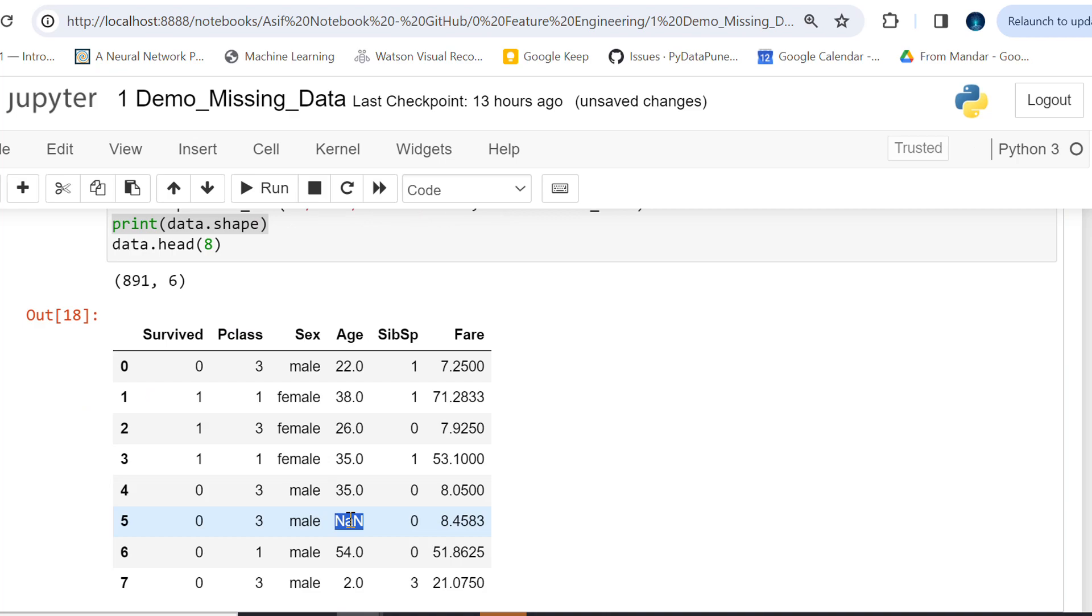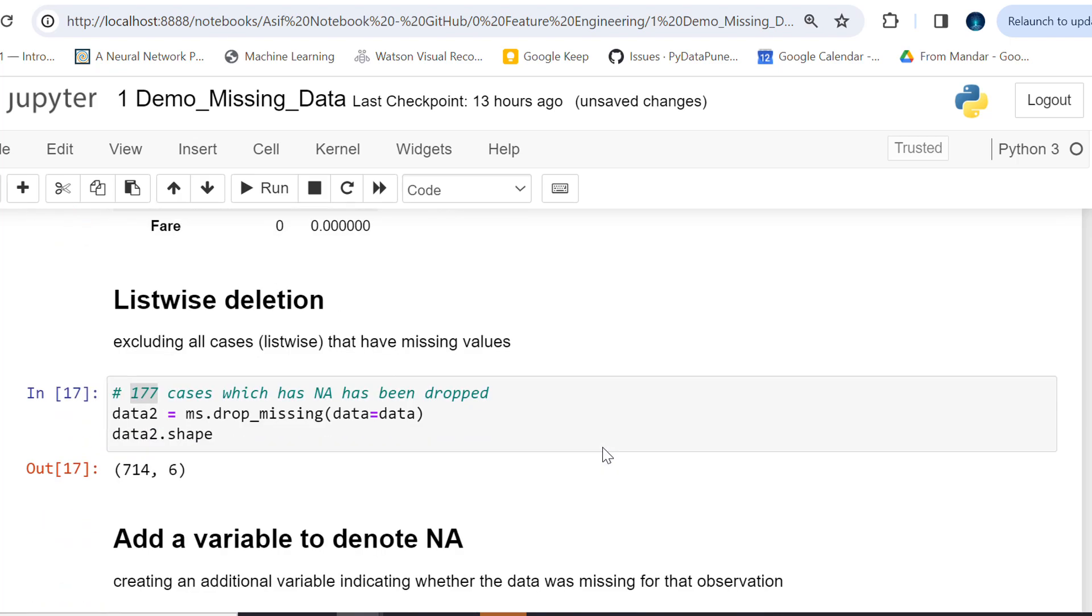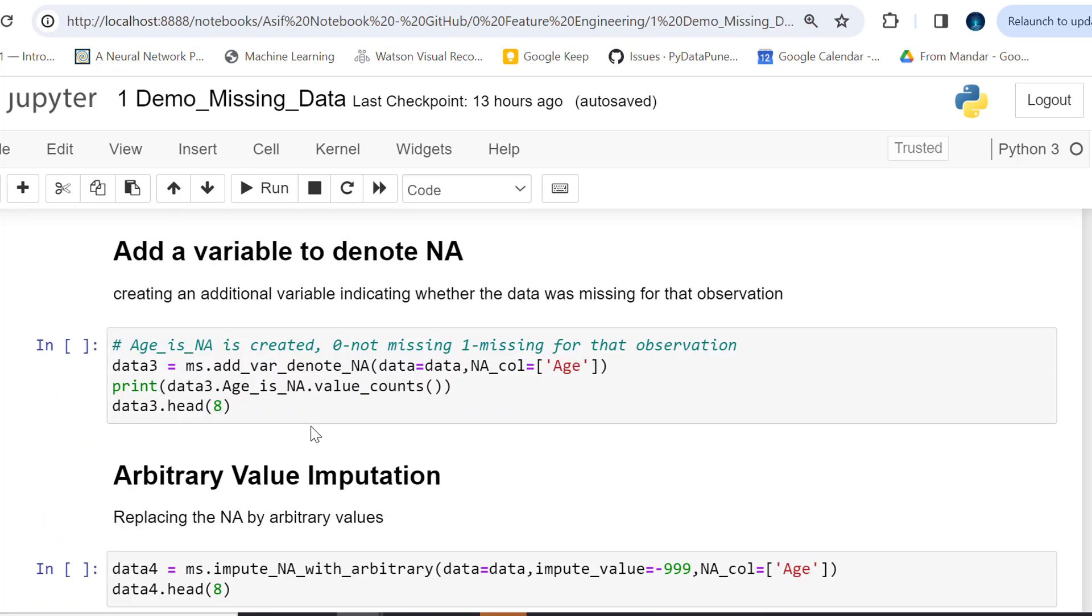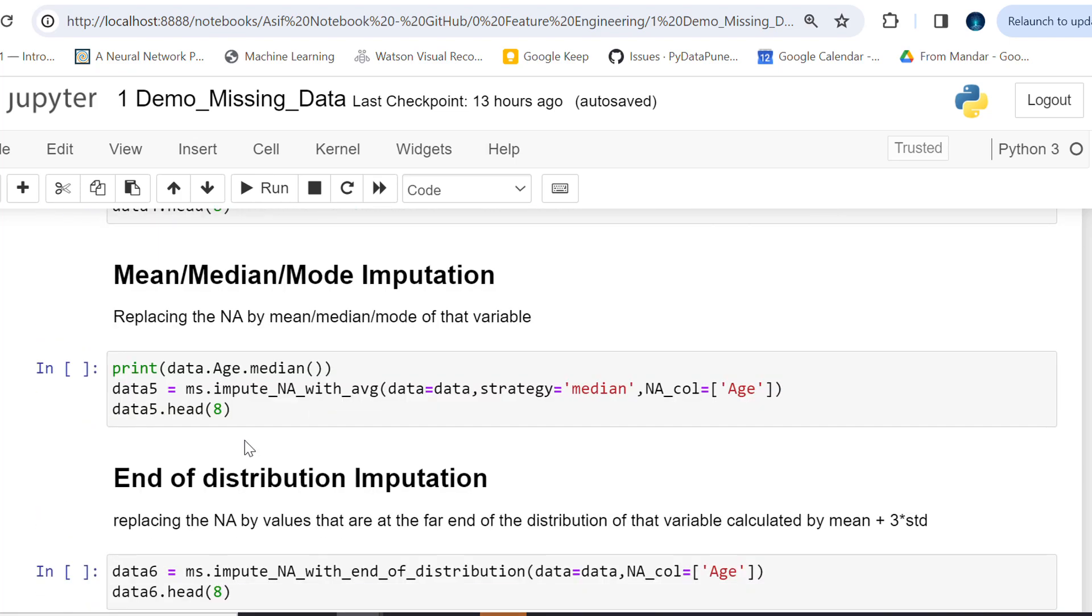You see, we did data.shape before dropping those NA and NaN rows—NaN fields. So we had 891, and after dropping we have 714.